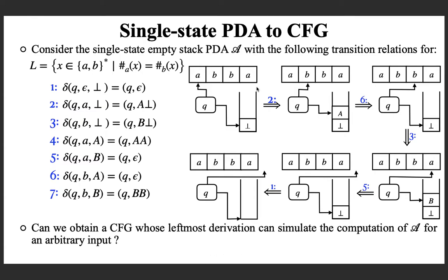The question is: can we obtain a context-free grammar whose leftmost derivation can simulate the computation of this pushdown automaton for an arbitrary input? Is it possible to produce a context-free grammar from a pushdown automaton such that the resulting grammar can simulate the computation of any input with a leftmost derivation? The answer is yes. In fact, it is the inverse of what we did in the last class for obtaining a pushdown automaton from a context-free grammar.